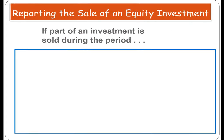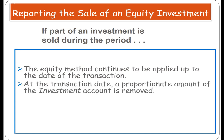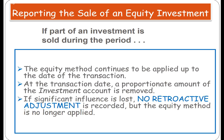The last topic is what happens if we sell part of our equity investment. The equity method continues to be applied up to the date of the transaction. At the transaction date, a proportionate amount of the investment account is removed. With significant influence lost, no retroactive adjustment is made, and the equity method is no longer applied.